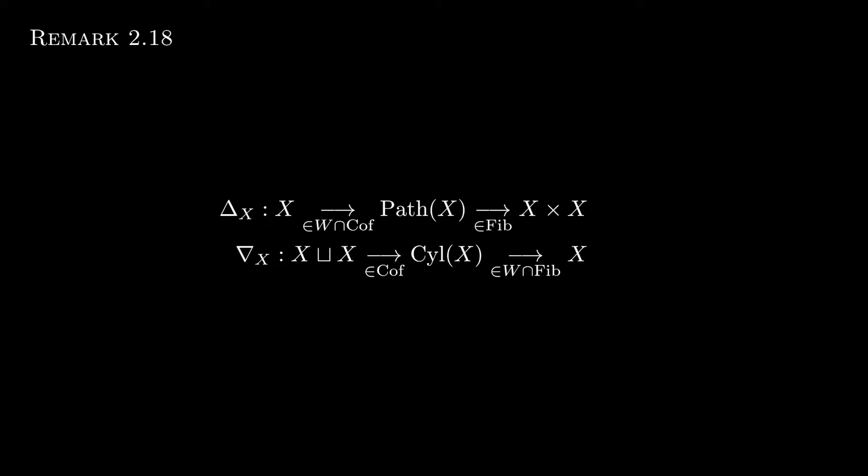Some people call these very good path space and cylinder objects. In fact, some authors don't even require the fibration and co-fibration parts of our original definition. They just require that a path space object factor the diagonal as a weak equivalence followed by something, and dually, a cylinder object factors a co-diagonal as something followed by a weak equivalence. Nonetheless, we take the approach from definition 2.18 from before.